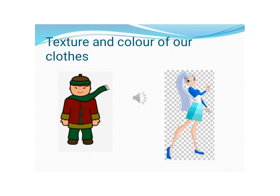Another example based on radiation is the texture and color of our clothes. A boy wears dark-colored winter clothes because dark colors absorb more heat and keep him warm. A girl wears light-colored summer clothes because light colors absorb less heat and keep her cool.